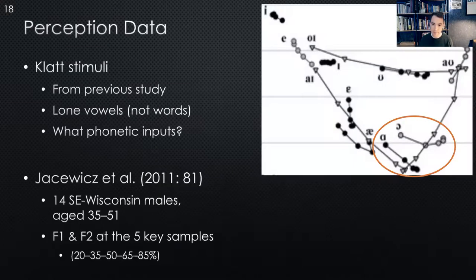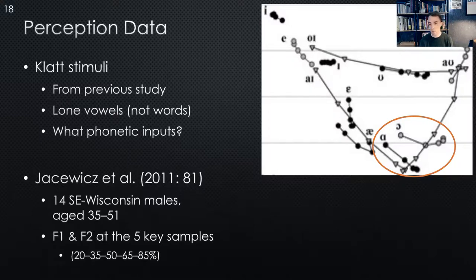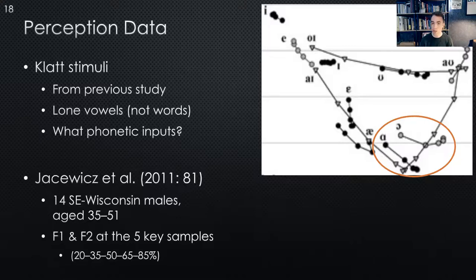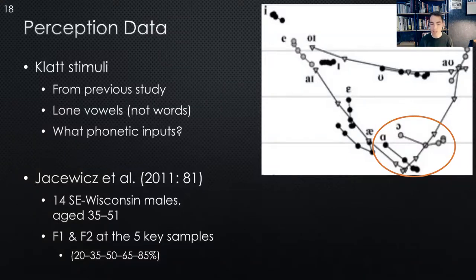For the perception task, I generated KLATT stimuli — computer-generated stimuli that don't sound like a human but sound like vowels. These were lone vowels from a previous study. In building the KLATT stimuli you have to decide what formants to put in as inputs. I got my data from work by Itsevich et al., who reported on F1 and F2 from speakers in southeast Wisconsin, where my participants came from — so I wanted acoustics that would sound like what they've probably heard in their lives. My stimuli are based on F1 and F2 at those five key samples with linear interpolation between.